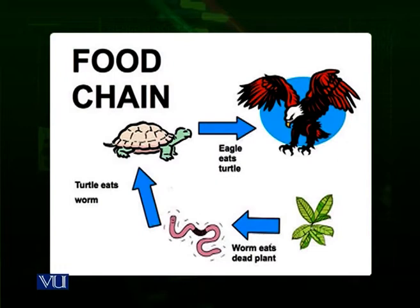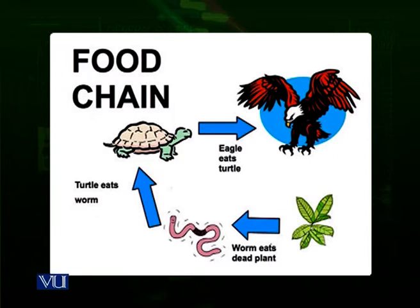Looking at the slide of a food chain, initially there is a plant. A worm eats upon this dead plant, then this worm is eaten by the turtle. Turtles are themselves eaten by eagles. This straight relationship shows: the plant is the producer, the worm is a primary consumer, the turtle is a secondary consumer, and the eagle is a tertiary consumer.